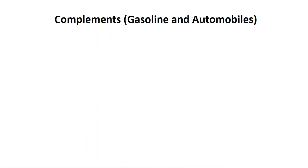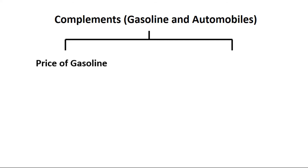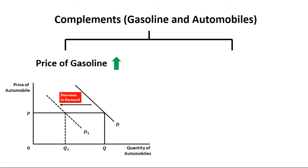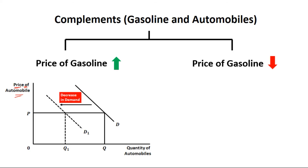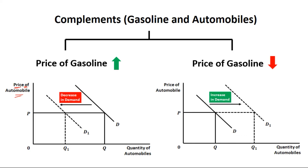Next we see the case of complements, using the example of gasoline and automobiles. Suppose that price of gasoline increases — in that case, demand for automobiles will be reduced, so there will be a leftward shift in demand curve, with price of automobile on the vertical axis and quantity of automobiles on the horizontal axis. Second case: if price of gasoline reduces, then demand for automobiles will be increased — a rightward shift — confirming the inverse relationship between price of one good and demand for another in case of complements.